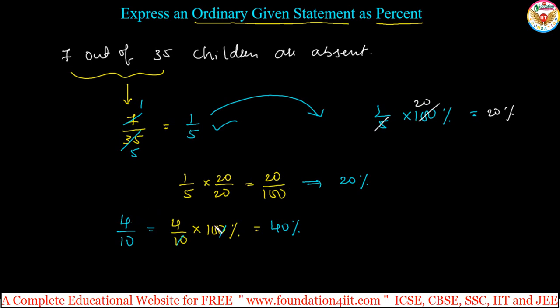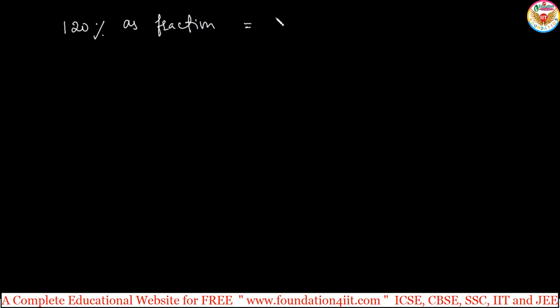To convert a fraction to percentage, multiply by 100 and keep the percentage symbol. Now let's go the other way — converting percentage to fraction. For example, 120 percent as a fraction: since we multiplied by 100 for fraction to percentage, we divide by 100 for percentage to fraction. Take 120 divided by 100; the zeros cancel giving 12 by 10, which simplifies to 6 by 5. So 120 percent as a fraction is 6 by 5.